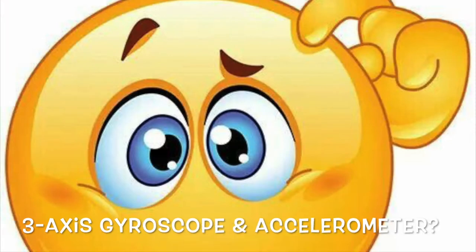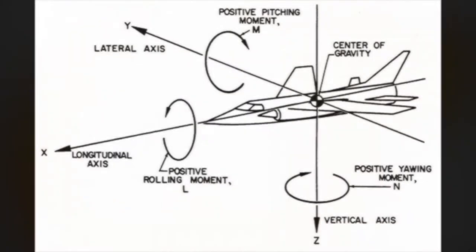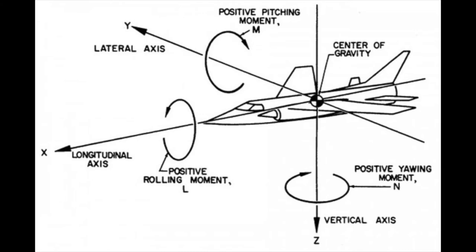Three axis gyroscope, an accelerometer? Gyroscope measures the orientation, whether you're upside down, while the accelerometer measures the position if you're in Phoenix, Arizona.